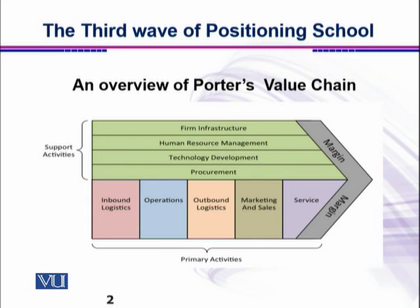You can see that there are two major domains. There is one domain upstream known as support activities. Then there is the other domain which is primary activities. To Porter, in an organization the activities are divided into two parts. One is the generic activities known as support activities, including firm infrastructure, human resource management, technology development, and procurement. The second domain of activities is about the primary activities.